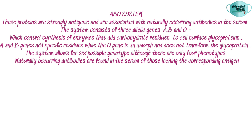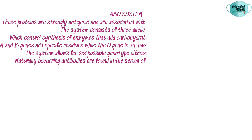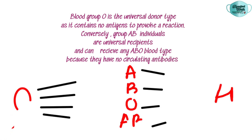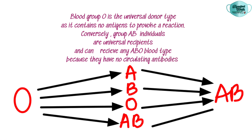The naturally occurring antibodies in the ABO system are found in individuals lacking the corresponding antigen. Blood group O is the universal donor type, as it contains no antigens to provoke a reaction. Conversely, group AB individuals are universal recipients and can receive any ABO blood type because they have no circulating antibodies.